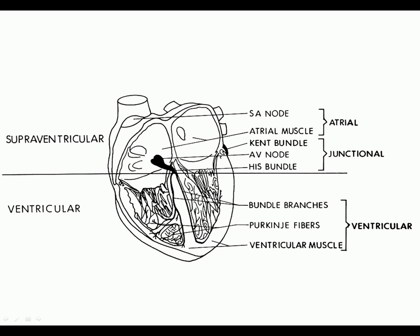We're dealing with premature ventricular contractions, or just premature beats. The main way they classify them is they're either superventricular or ventricular. Basically, anything that originates from above the AV node is going to be from a superventricular etiology — a superventricular tachycardia or superventricular premature beat. Anything that originates from the ventricles, or below the AV node, below the atrial ventricular septum, is going to be a ventricular origin — a premature ventricular contraction or ventricular tachycardia.